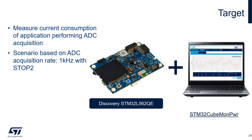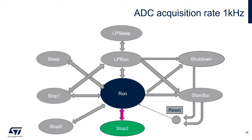Consumption will be measured using the CubeMonitor Power and the power shield. The purpose of this demonstration is to show the importance of wake-up time and consumption in low-power mode, in this case STOP2. In the transition table between various low-power modes on STM32L5, for this particular example we will use run mode at 4 MHz to take the sample and then enter STOP2 once it is finished.